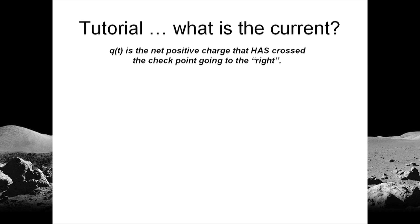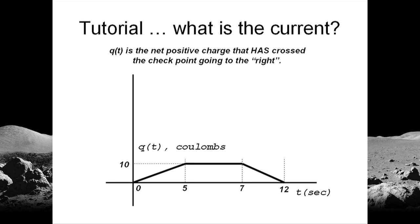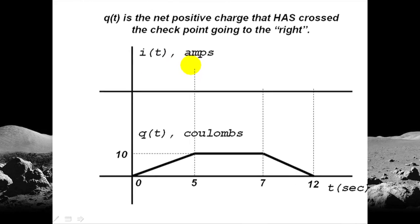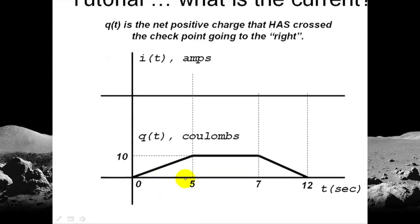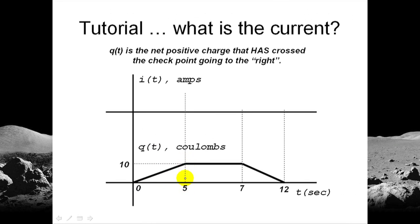What is the current in this case? We are given q as a function of time. In here, we will plot the current as a function of time. From zero to five seconds, the slope of this q in the graphic is constant. It is ten coulombs divided by five seconds. The slope is two coulombs per second.